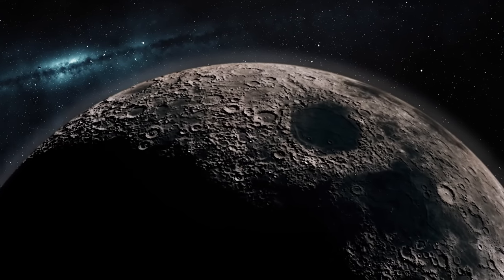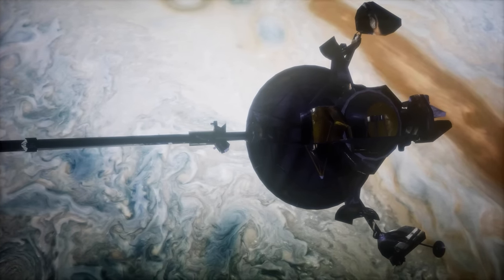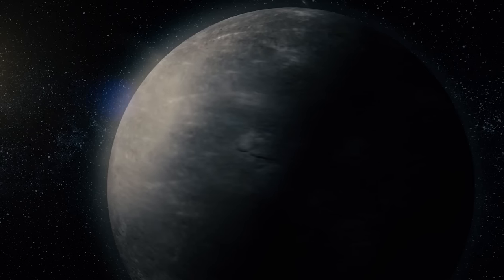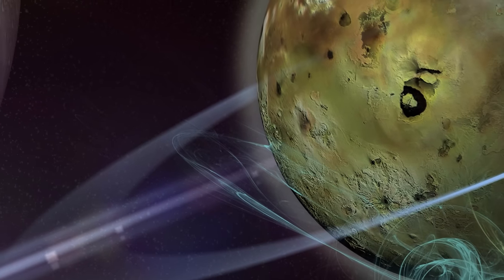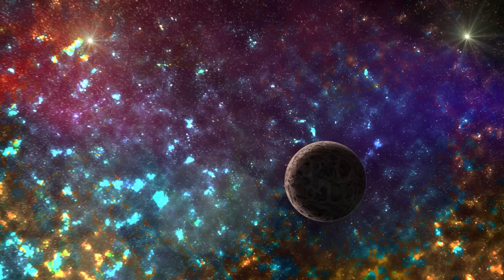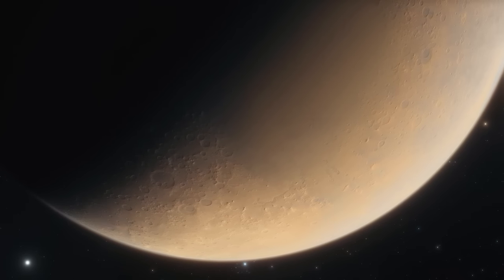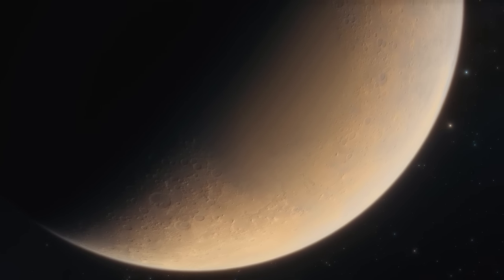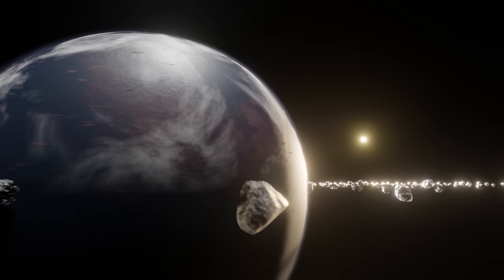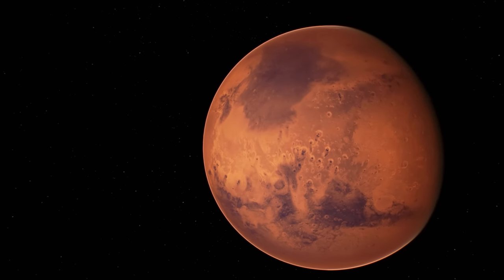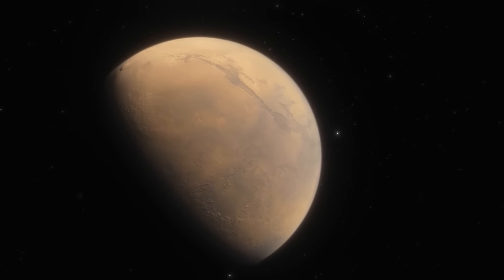Size-wise, rogue planets can range from being as massive as Jupiter, the largest planet in our solar system, to being as small as Earth or even smaller. And while they lack the warmth of a star, they aren't necessarily devoid of energy or activity. Some rogue planets might still radiate heat from their formation. This residual warmth, combined with potential internal heat-generating processes, means these planets could harbor subsurface oceans. There's also a possibility that life, at least in some primitive form, might exist on these worlds. If a planet was ejected from its system with a thick atmosphere and enough internal heat, it could provide the necessary conditions for life to persist.